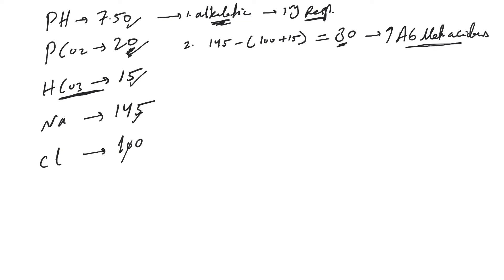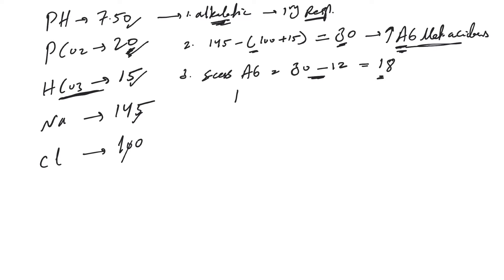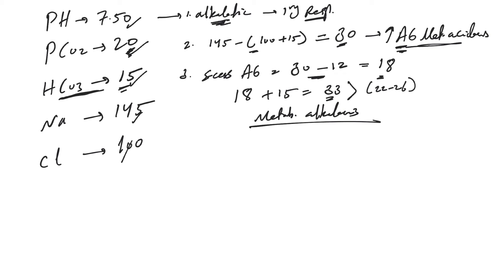The reason we always call this a disorder when there's an elevated anion gap: compensation for respiratory alkalosis makes you lose bicarb, not produce acids. So when we see the anion gap, there is an increased anion gap metabolic acidosis. Next, the excess anion gap is 30 minus 12 equals 18. Adding 18 to the bicarb of 15 gives 33. Comparing to normal bicarb of 22 to 26, it's bigger — indicating associated metabolic alkalosis. So this patient has three disorders: primary respiratory alkalosis, increased anion gap metabolic acidosis, and metabolic alkalosis.